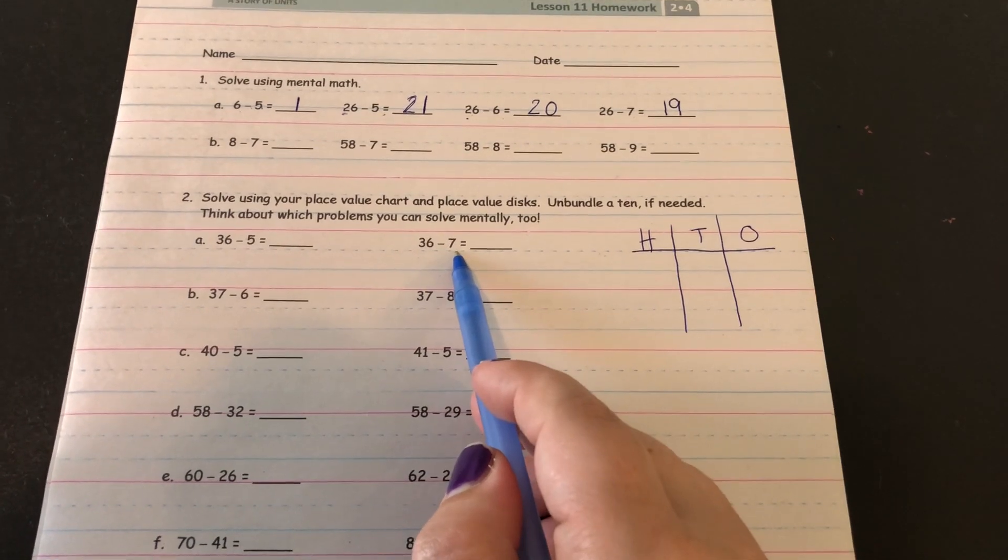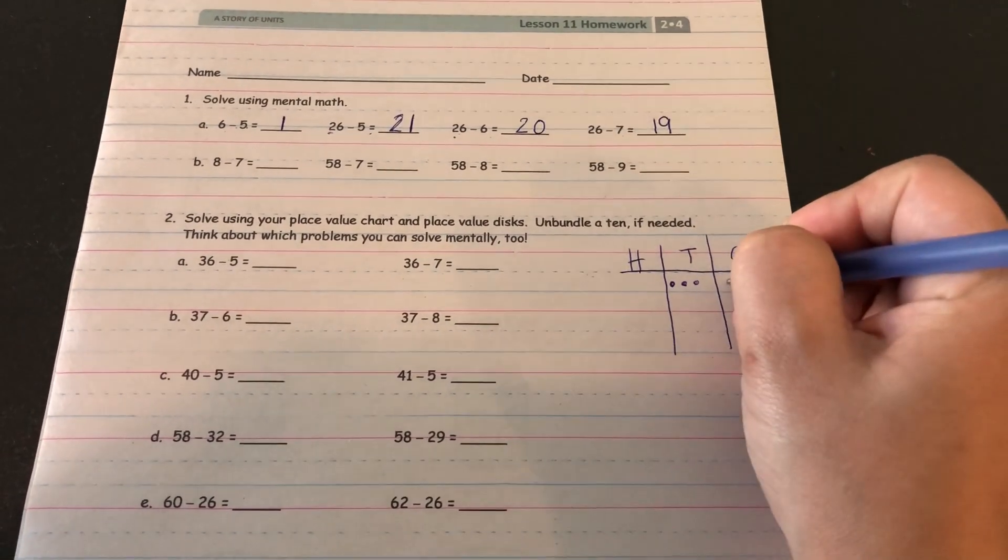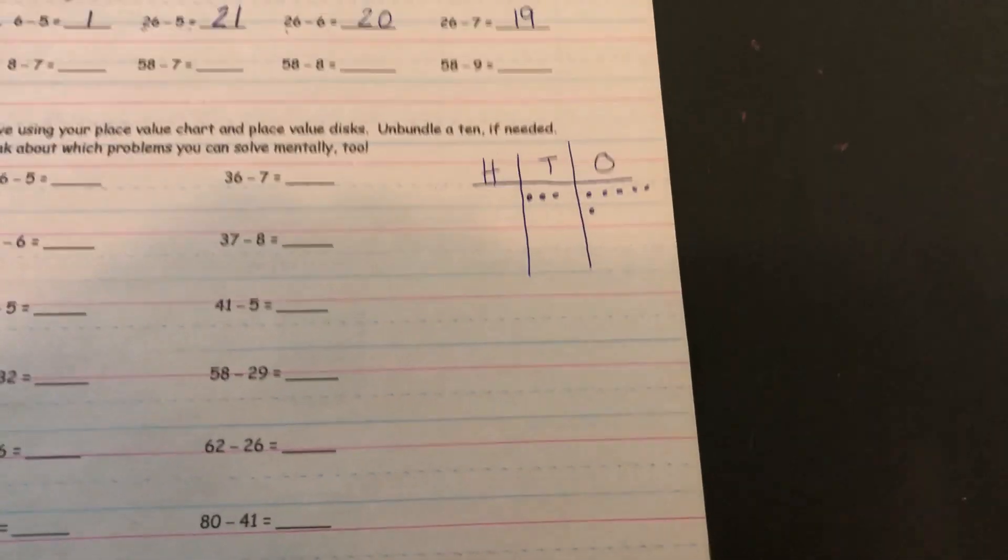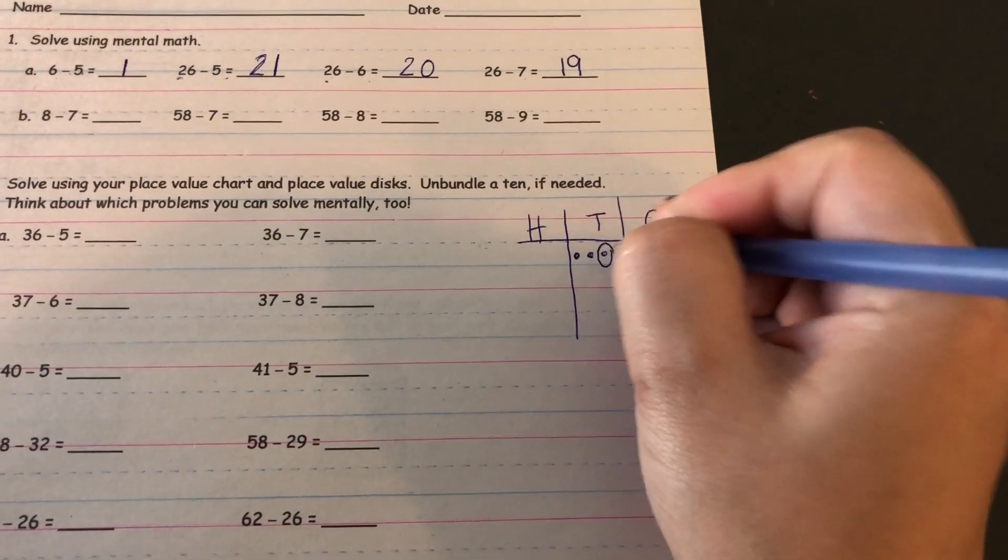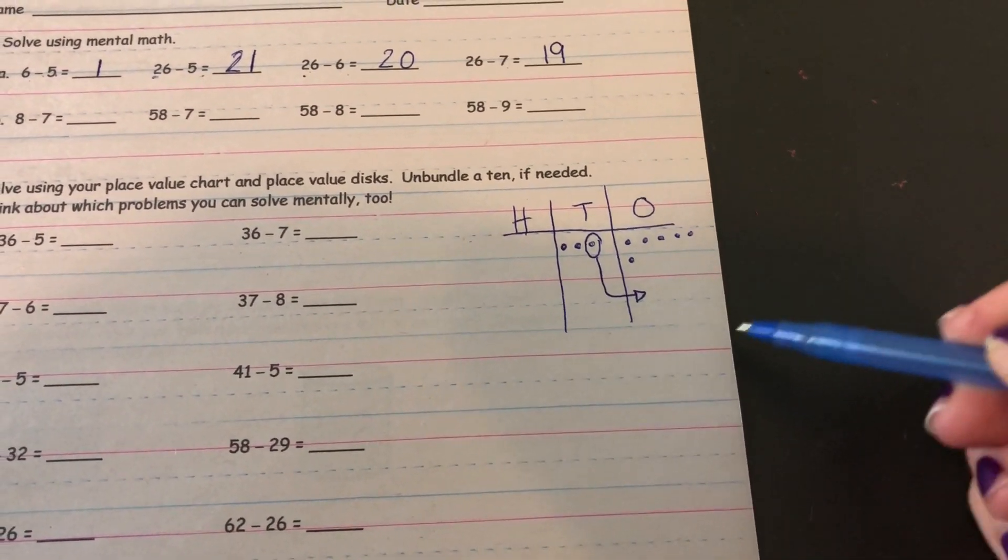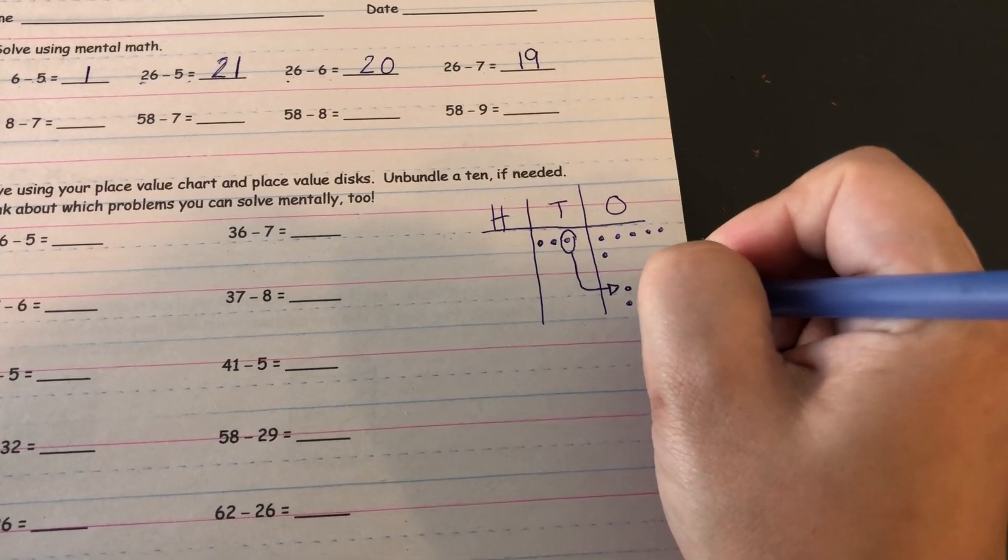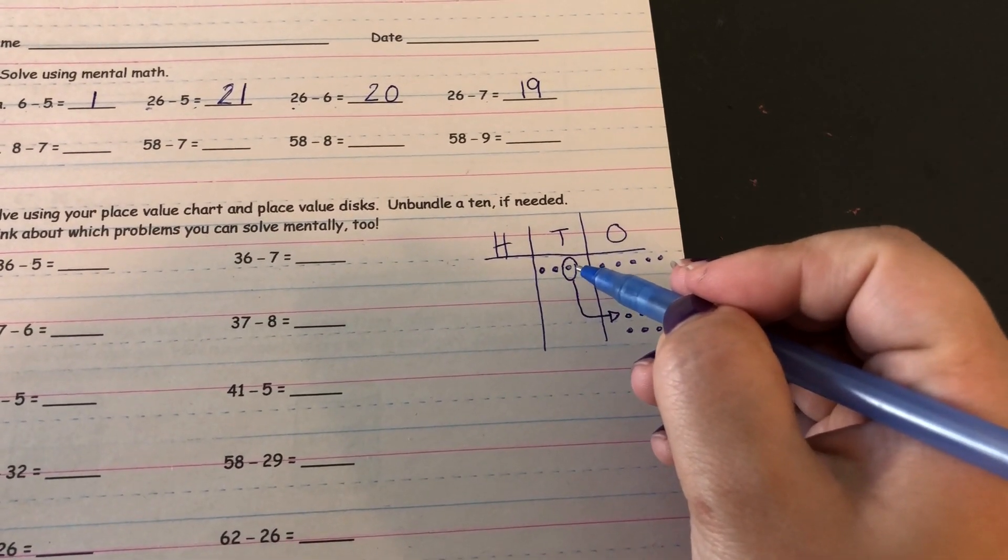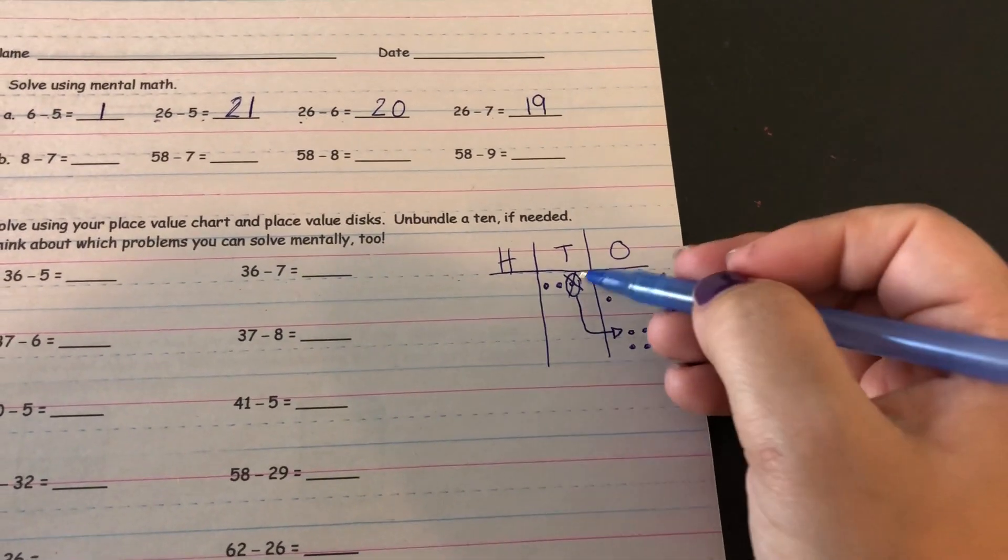So let's say I want to do 36 minus 7. I can start by showing 36 which would be 3 tens and 6 ones and it wants us to subtract 7 ones. Well when you go to do that you can't, there's not enough, so I need to unbundle one of your tens and I know that if I unbundle this ten, ten ones will come out of it. So the opposite of what we've been doing with addition where we bundle these ones together to make the ten, we usually go this way, bundle these and make this, but now we're doing the opposite, we're unbundling a ten and turning it back into ten ones. So I no longer have that ten because now I have ten ones.